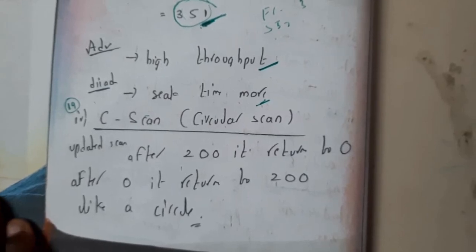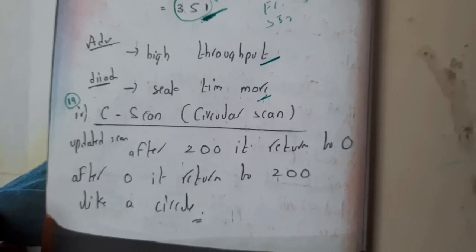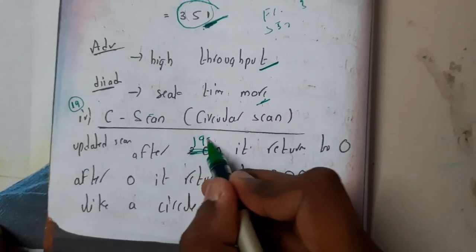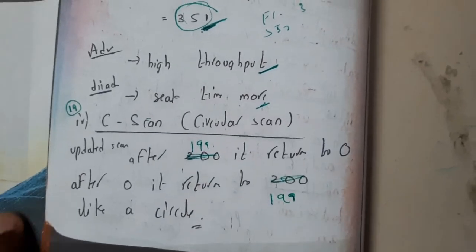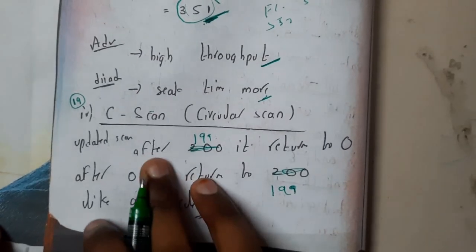Hello, we are back with our next tutorial. In this tutorial, let's go through the C-SCAN algorithm. In the previous lecture, it traveled up to 199. If you're reading from my PDF, please note the value should be 199, not 200. After reaching 199, it should automatically return to zero.